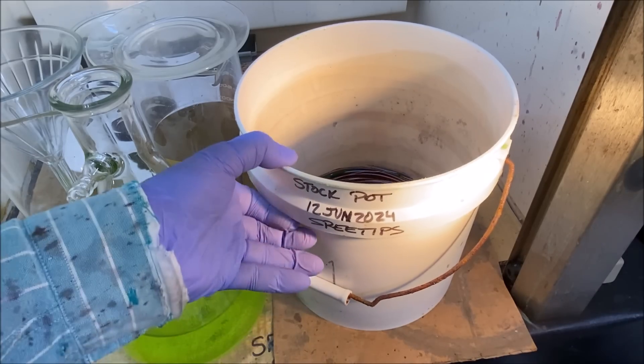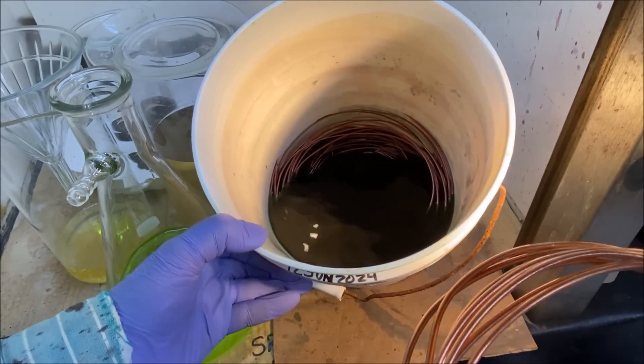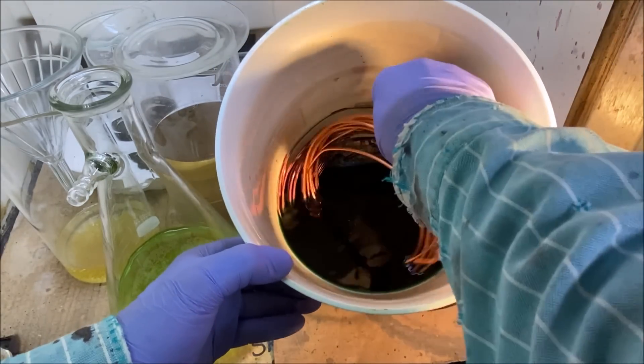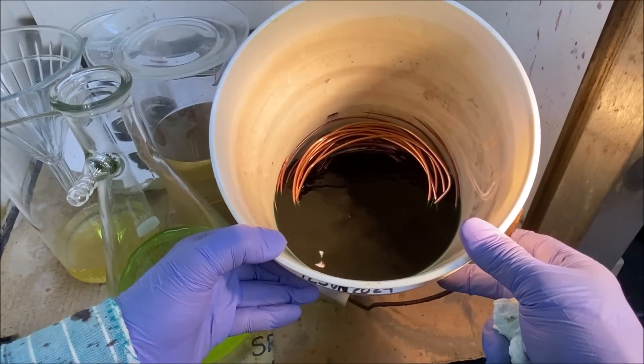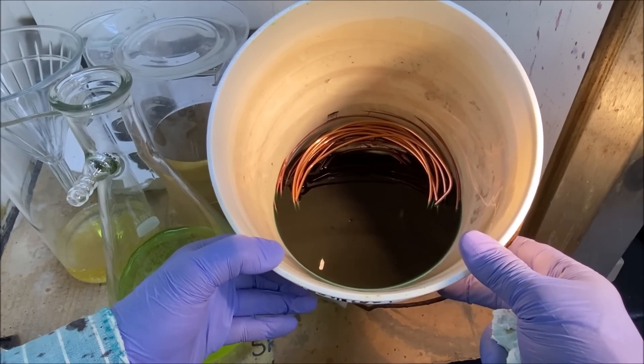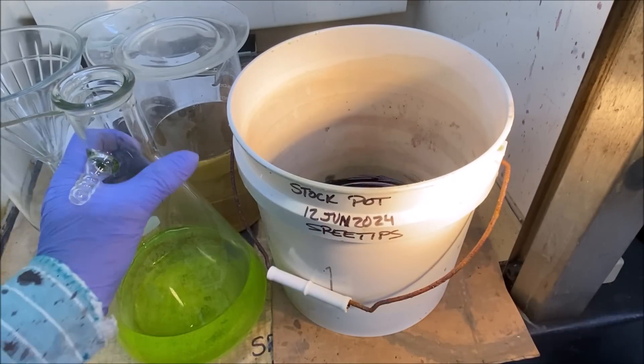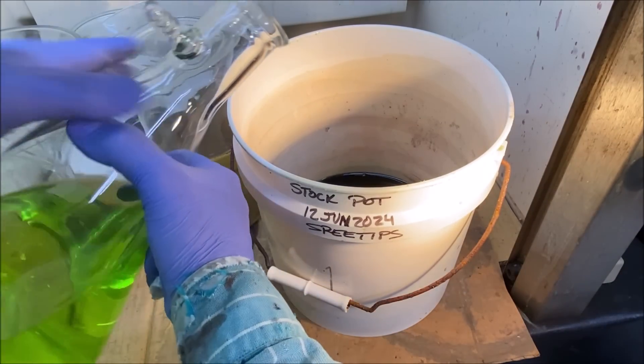This stock pot is full of pieces of copper. And then the platinum group metals will cement out on that copper, fall to the bottom of the bucket as a black mud. And then we can recover them later on.